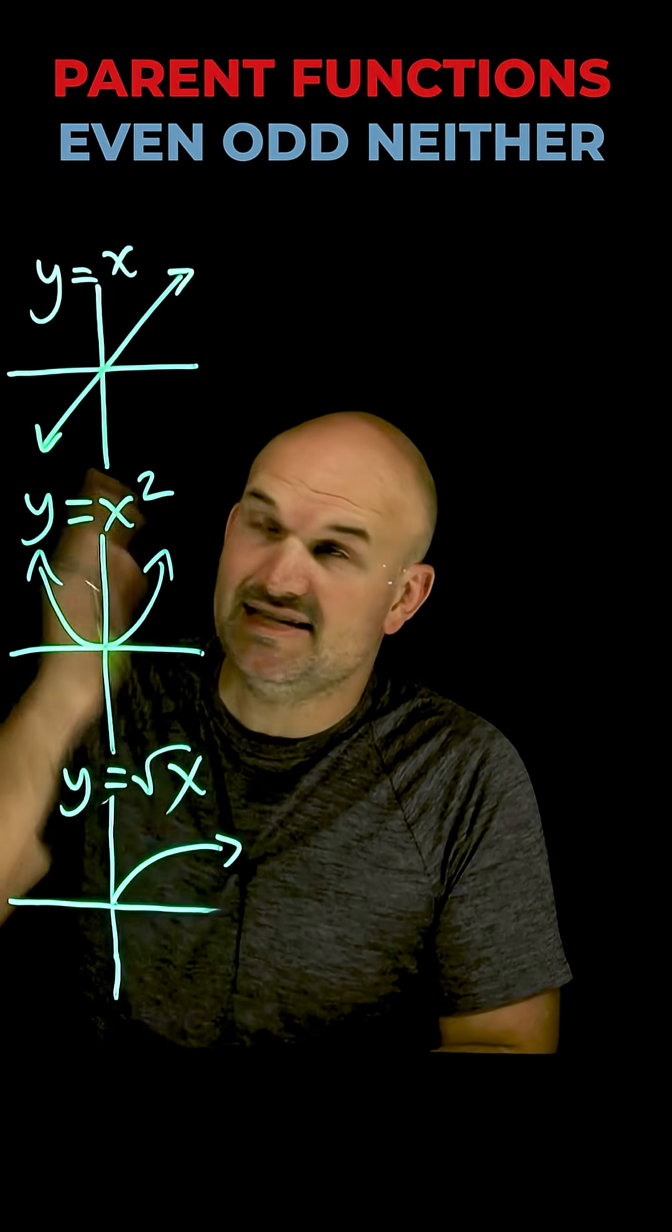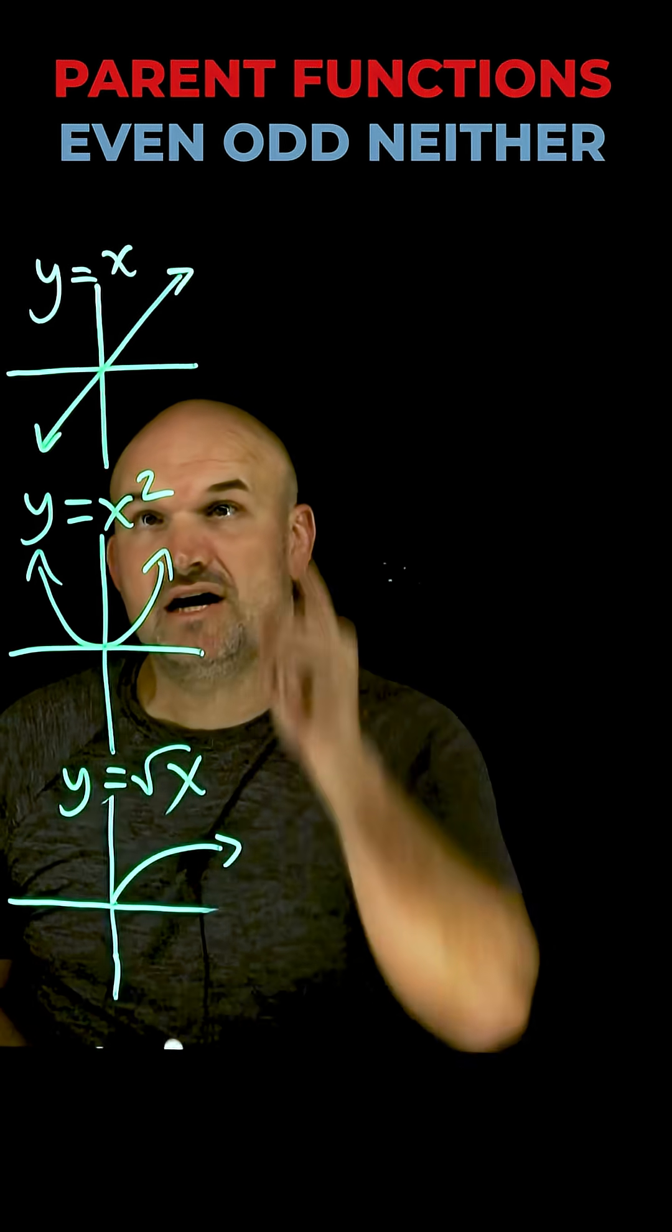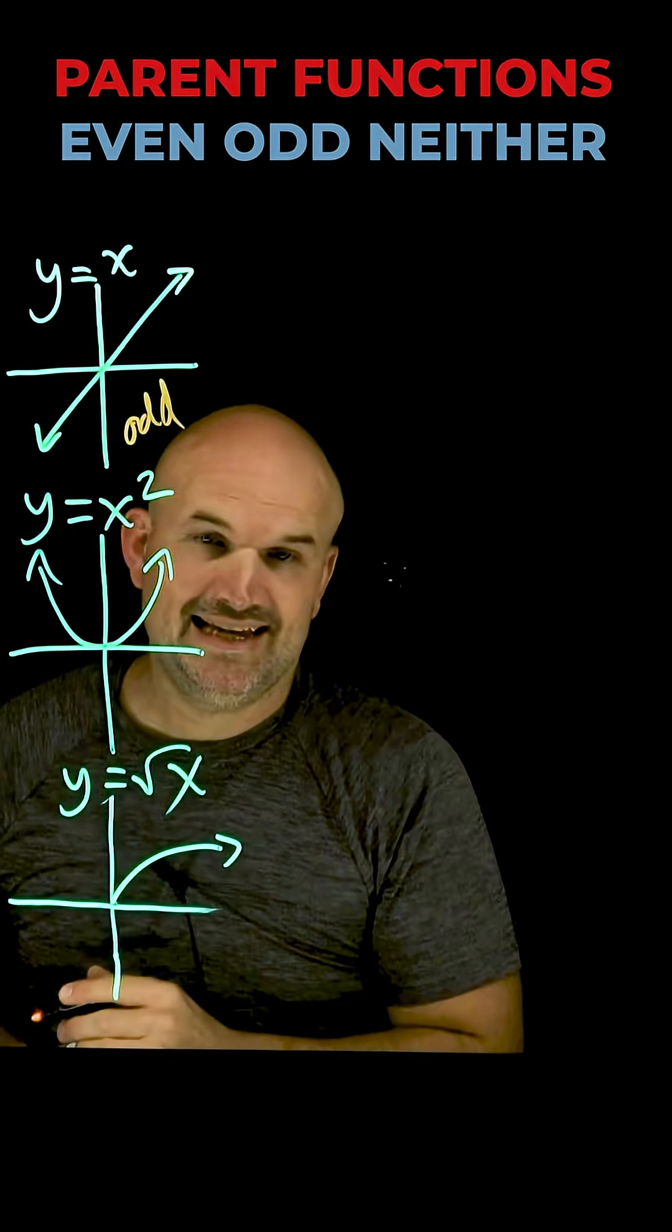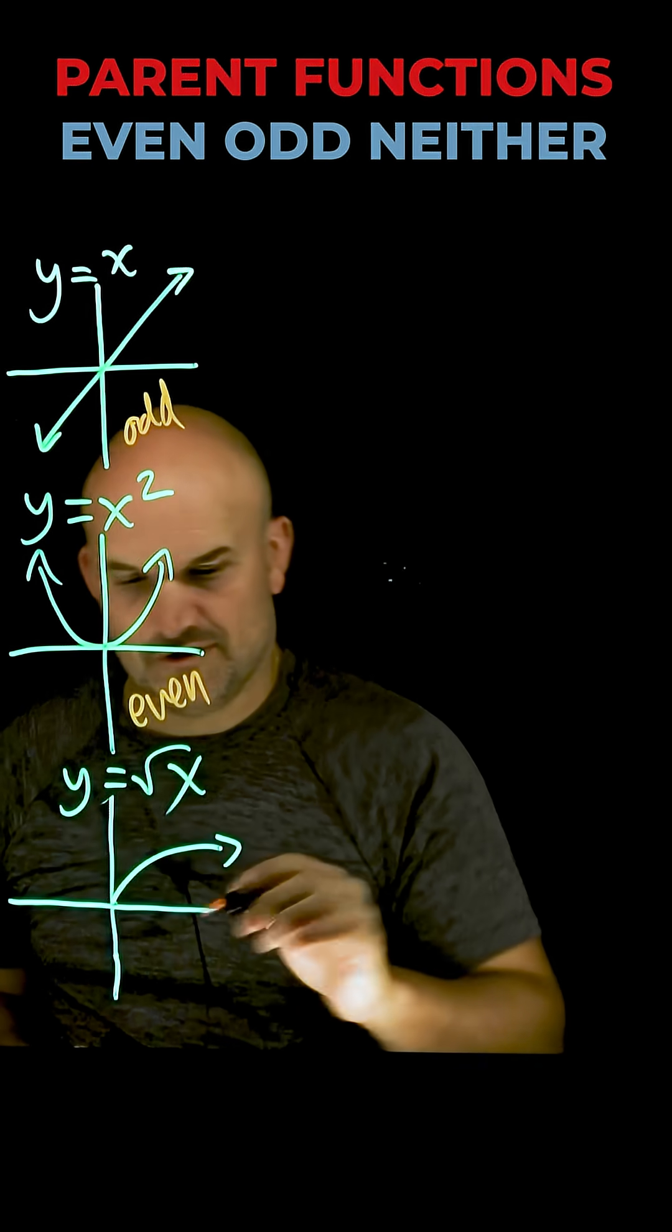These three parent graphs are important because they are simple examples of an odd function, an even function, and a neither function.